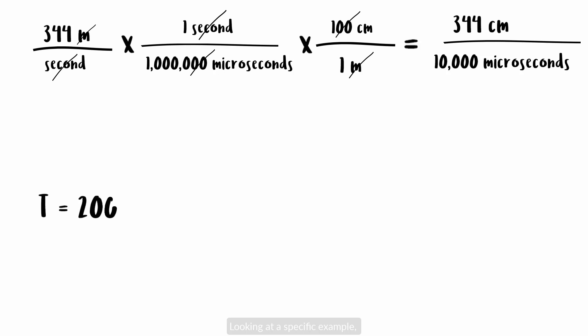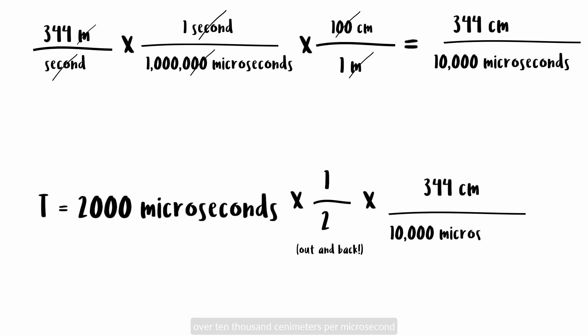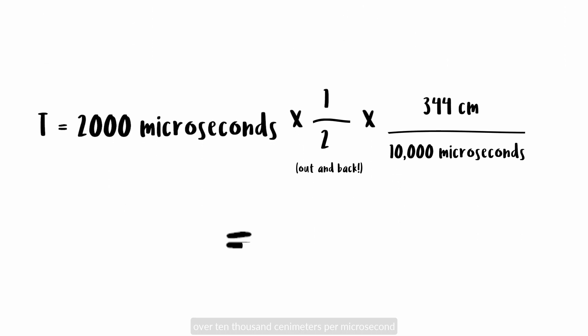Looking at a specific example, if the sound takes 2,000 microseconds to return, that's 2 thousandths of a second, then we know it took 1,000 microseconds to travel out and the same to travel back. So, 2,000 microseconds times 1 half for the distance out but not back times 344 over 10,000 centimeters per microsecond equals 34.4 centimeters away.